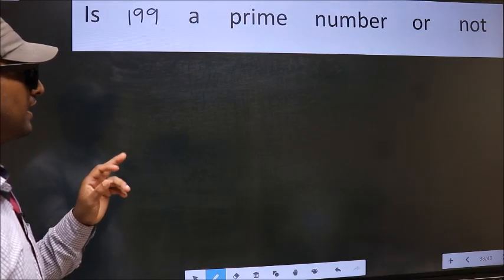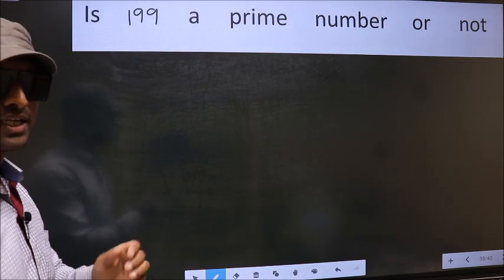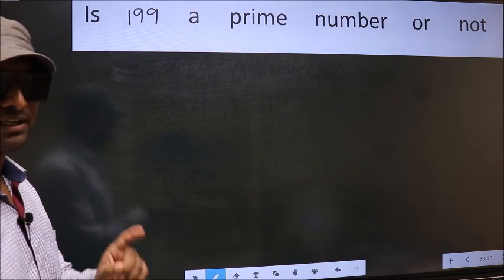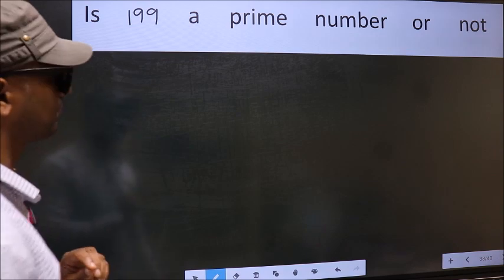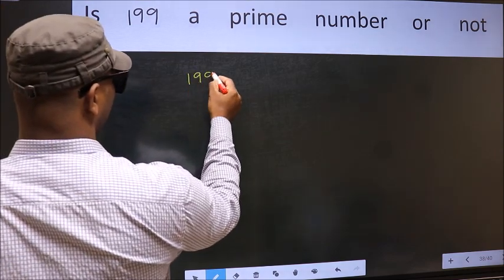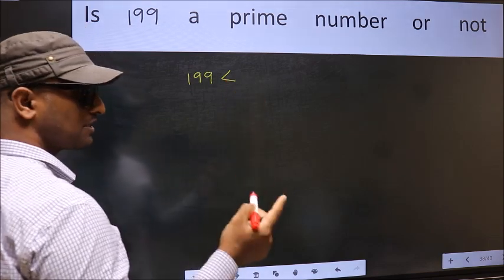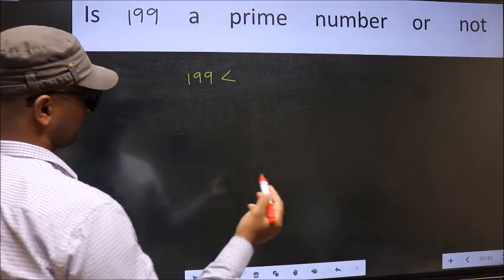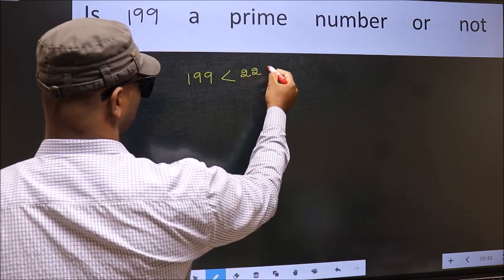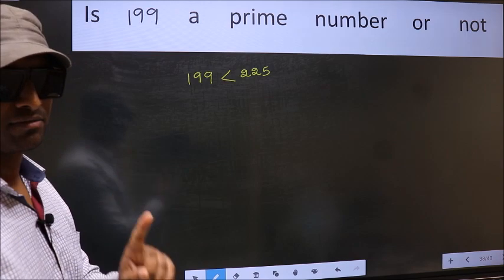Is 199 a prime number or not? To check whether the given number is prime or not, step 1: the given number is 199. This is less than and close to the perfect square number 225.